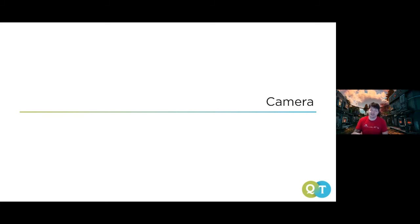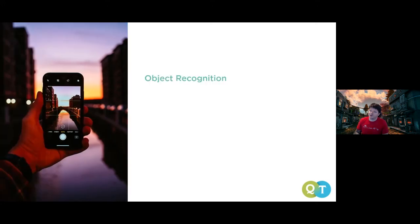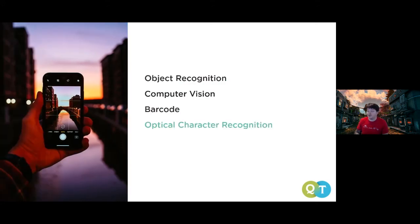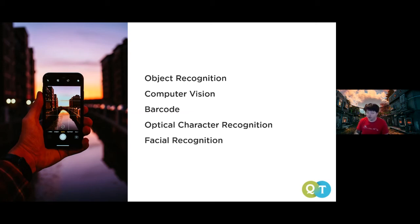Let's quickly cover the camera. We'll cover five use cases: object recognition, computer vision, barcodes, optical character recognition, and facial recognition. For image processing, I think of it in four ways: formatted images, algorithmic approaches, data-driven approaches, and multi-factor combinations of the two.